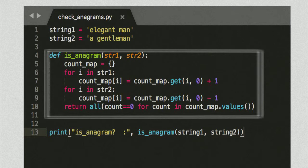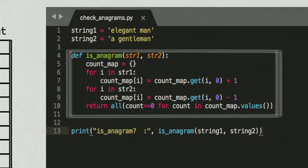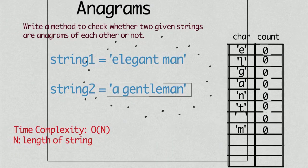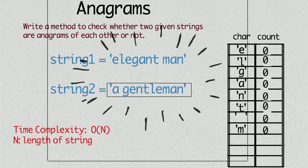All is a built-in function which returns true if all elements of the given iterable are true. Here it will return true if count of all characters are 0.